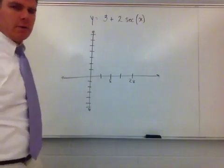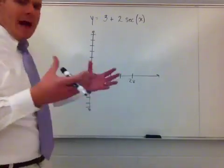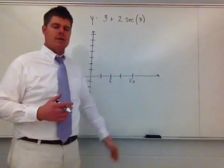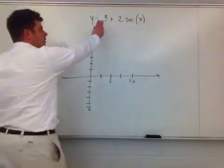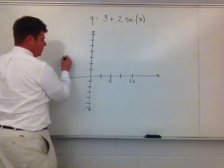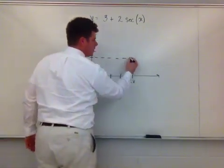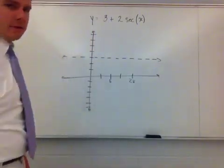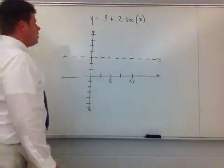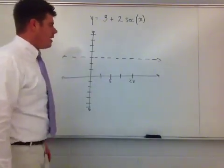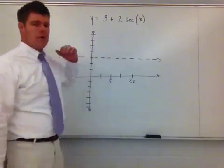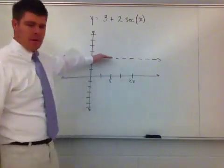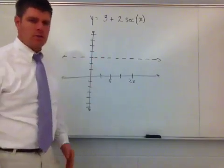Now I need to find where my new central imaginary axis is going to be, because my function is centered around some horizontal axis. The vertical shift is up 3, so I count 1, 2, 3 and draw in an imaginary dashed axis — anything dashed on the graph is imaginary, not really there. My amplitude is 2, so my maximum is 2 units above this axis and my minimum is 2 units below it.